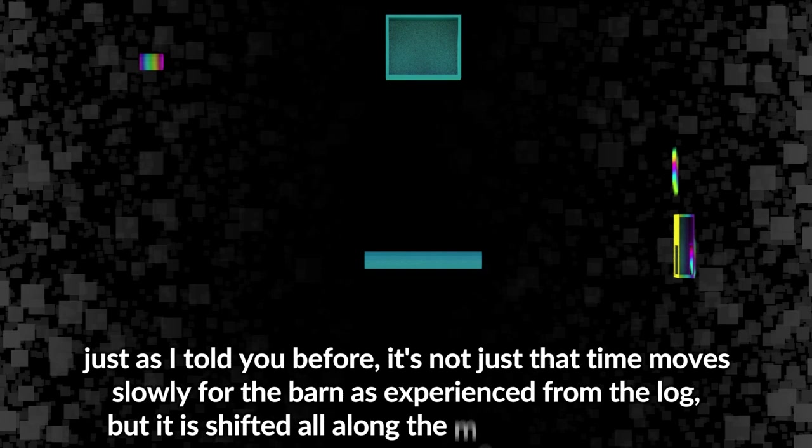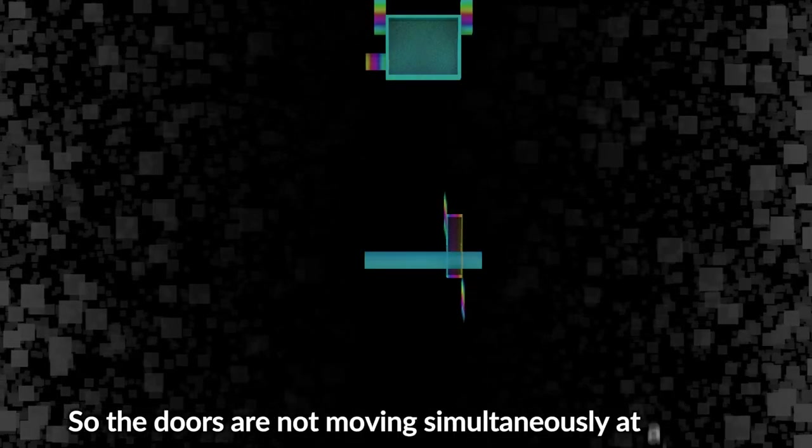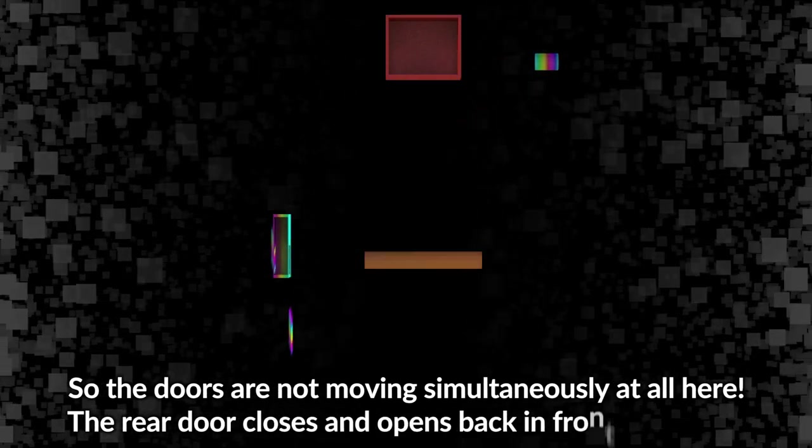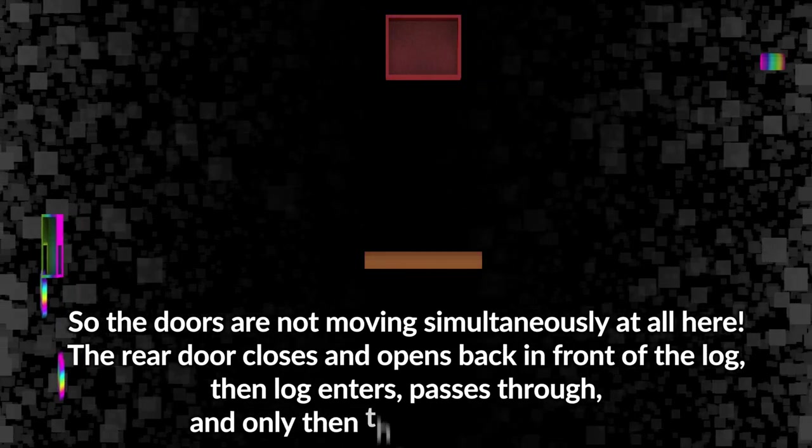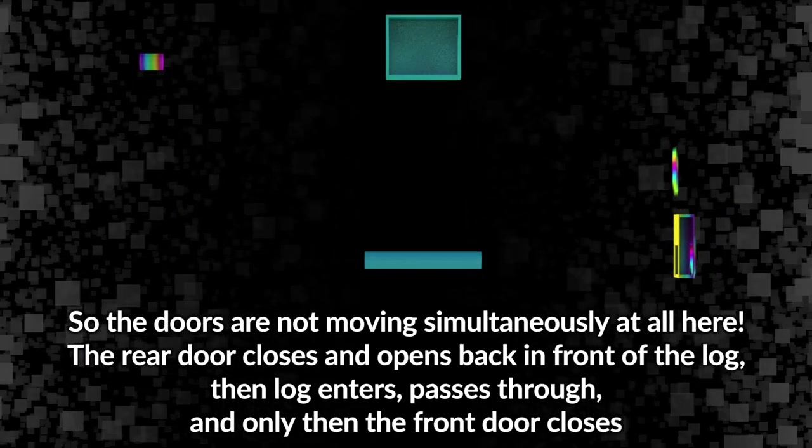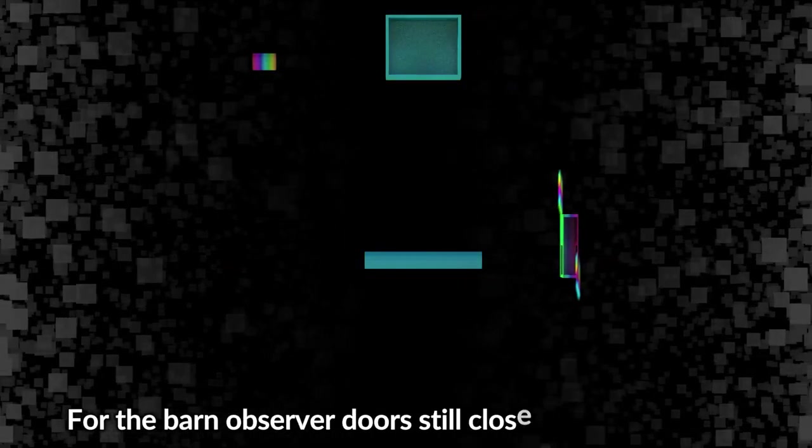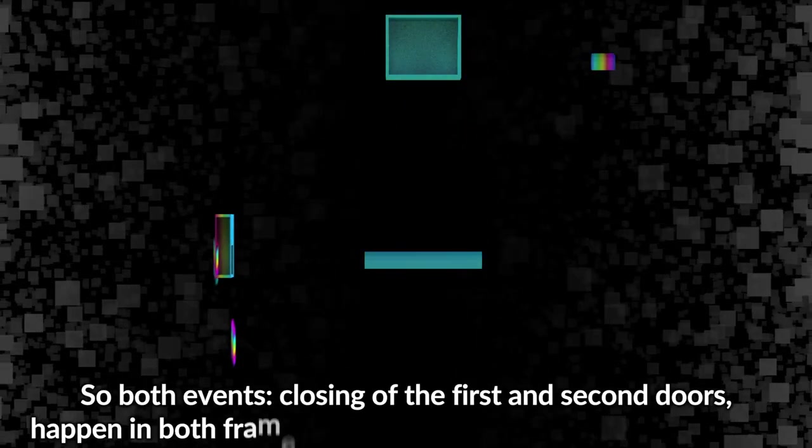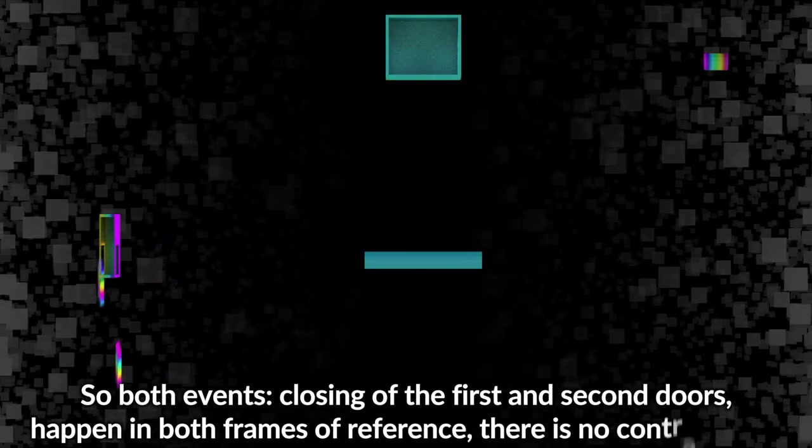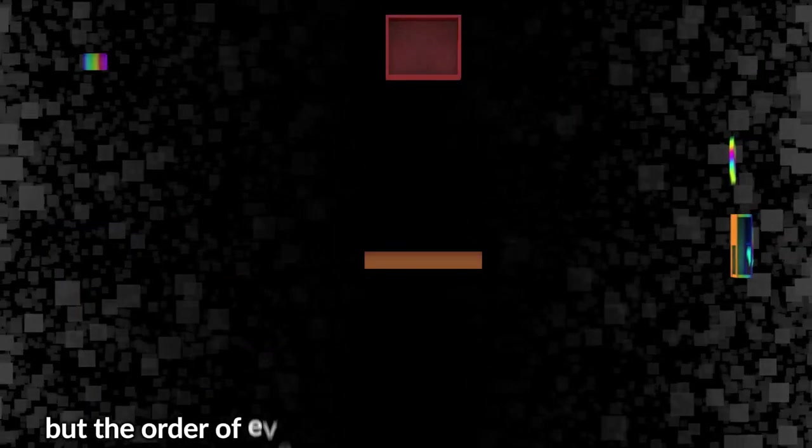Just as I told you before, it's not just that time moves slowly for the barn as experienced from the log, but it is shifted all along the movement direction. So the doors are not moving simultaneously at all. Here the rear door closes and opens back in front of the log, then log enters, passes through, and only then the front door closes. For the barn observer, doors still close at the same time, so both events - closing of the first and second doors - happen in both frames of reference.